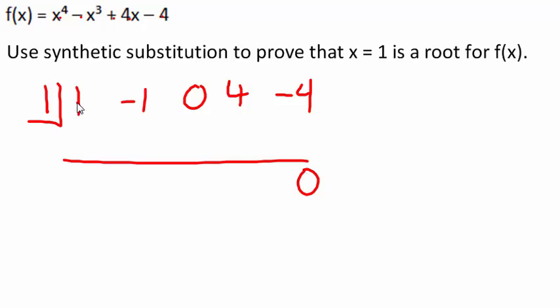So synthetic substitution, we bring the 1 down below the line. Multiply by the box number gives you 1. That goes in the next available spot. Add down the column, you get 0. Multiply it by the box number, you still have 0. Add it down the column, you still have 0.